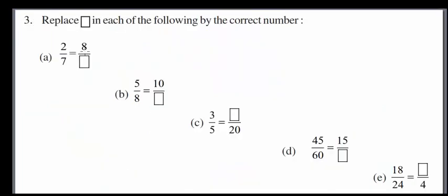Third part: replace the blank in each of the following with the correct number. We have 8 — dividing gives us 2 and 4. We multiply in the denominator part to get 28, making equal ratios: 8 over 28. For 5, multiplying gives 10 in numerator; similarly we multiply in the denominator to get 16.